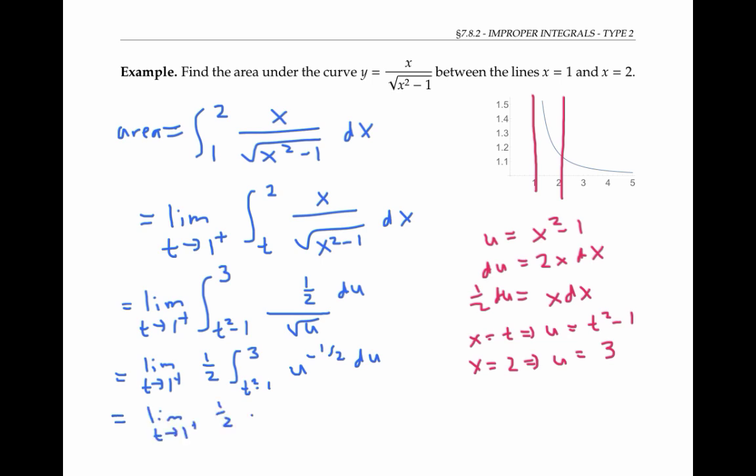Now I can integrate. I get two times u to the one half evaluated between three and t squared minus one. My one half and two cancel, and I'll plug in my bounds of integration here. Now as t goes to one from the right, t squared is also going to one, so t squared minus one is going to zero.